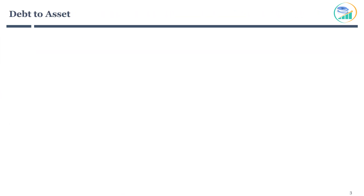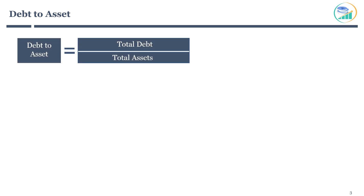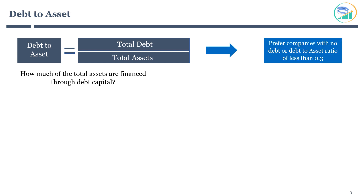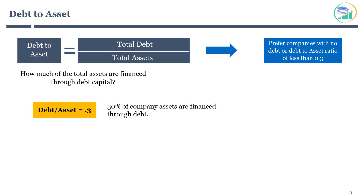Let's move on to the next ratio: debt to asset. It is calculated as total company debt divided by total company assets. This ratio helps to understand how much of the total assets are financed through debt capital. I generally prefer companies with no debt or a debt to asset ratio of less than 0.3. A debt to asset ratio of 0.3 indicates 30% of company assets are financed through debt.